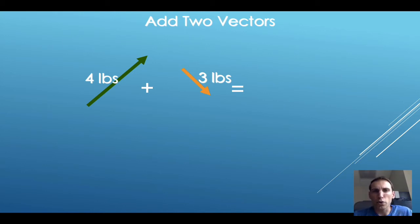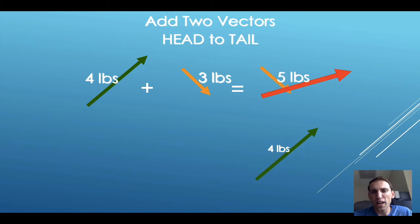The process for adding these two is still the same, though. We draw the first vector and add on that second one head to tail. The resultant is going to be the vector that connects the starting point and the ending point.